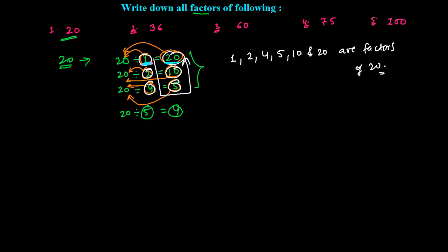Every number at least contains two factors: 1 and the number itself. These two are always the factors in every number.